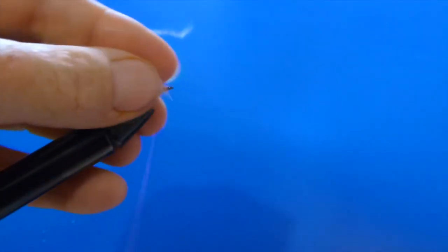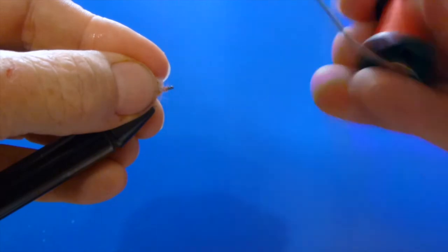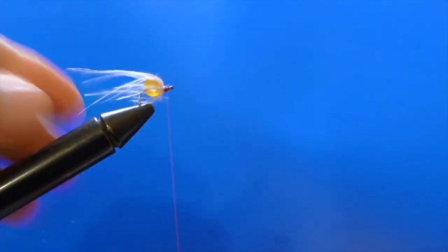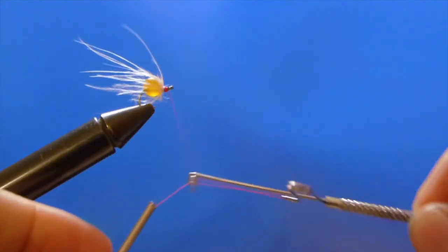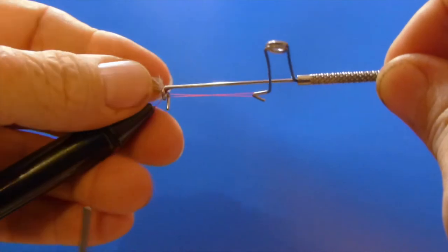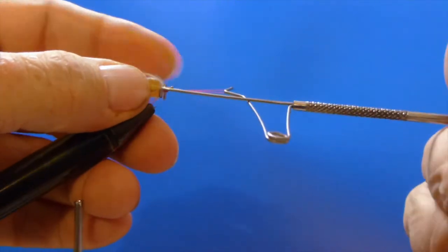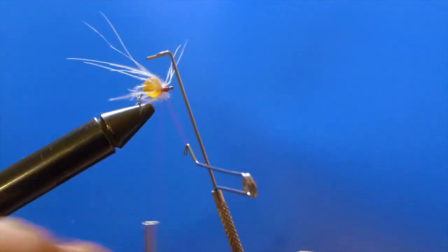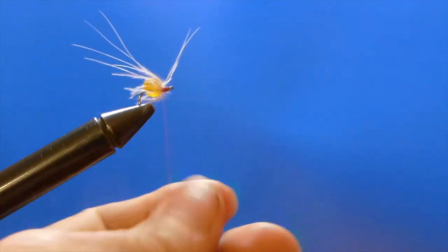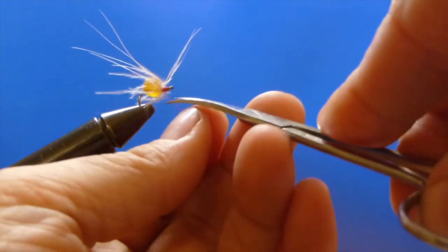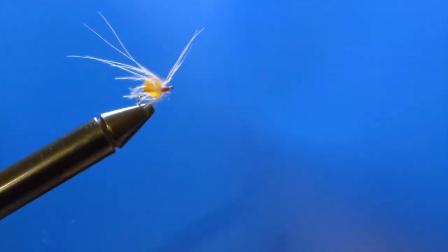So I'm just going to finish tying off the head here. We're going to have to pull back on that marabou as we tie off the head, and then we'll just give it a quick whip finish. Now again, not many strands of the marabou. We don't want it to overtake that fly. We just want it to help out when we're actually fishing. So we'll tie it off, trim it up, and we're good to go.